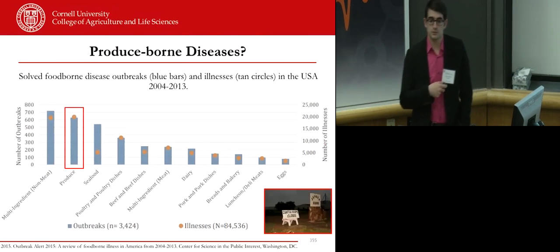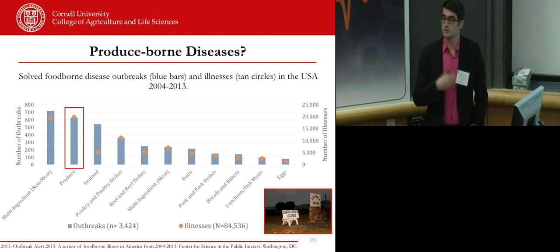And then within produce-borne disease, there's different foods that are associated with it. The single ingredient food that is associated with the most illnesses for outbreaks and the most outbreaks in the United States is fresh produce. In fact, fresh produce is associated with twice as many illnesses and outbreaks as meat, which is kind of the food that is in the public mind as being associated with foodborne diseases.